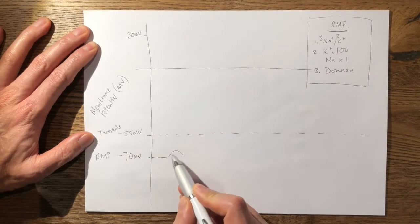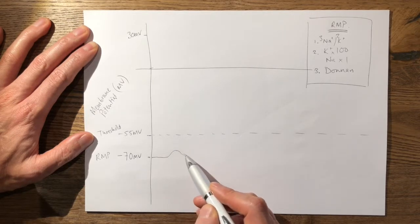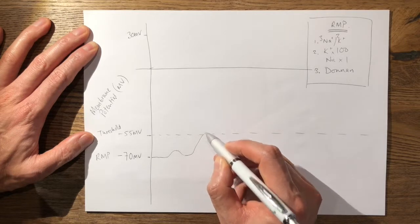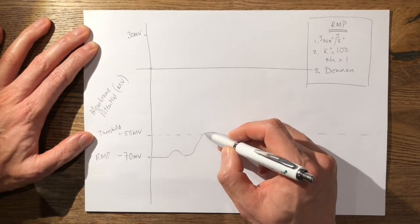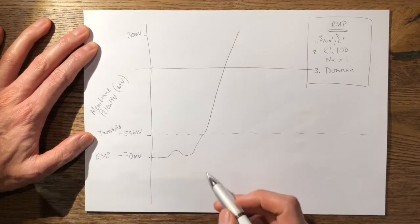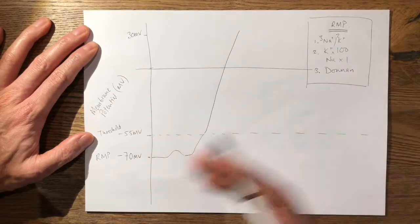So here, if you see, if there is a stimulus which acts below the threshold, an action potential won't propagate. However, if you do eventually get a big enough stimulus, then you get a sudden opening of the voltage-gated sodium channels and an action potential will ensue.